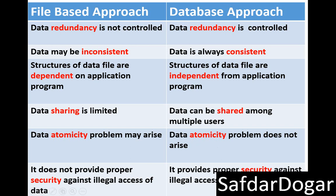The first point: data redundancy is not controlled in the file-based approach, but data redundancy is controlled in the database approach. Data redundancy means if you record data several times in many places, we call it data redundancy. The file processing system does not control it, whereas the database approach does. Data may also be inconsistent in the file-based approach, but in the database approach data is always consistent.